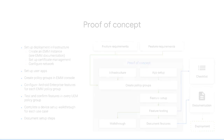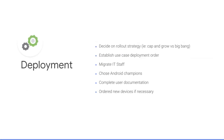And finally, it's time to start your deployment. In this phase, you'll need to select your rollout strategy and establish your use case deployment order. Consider migrating your IT team first and selecting Android champions from other teams and business units to include in this first deployment group. Finalize any changes to your user setup documentation with this first group so the content can be available during the remainder of your deployment.